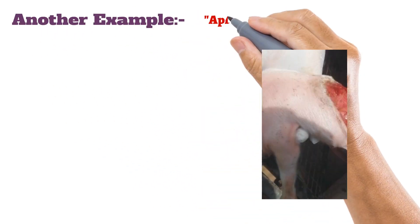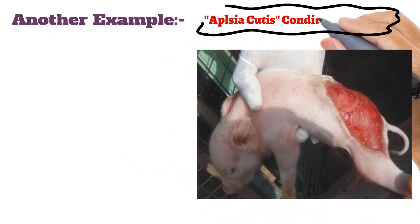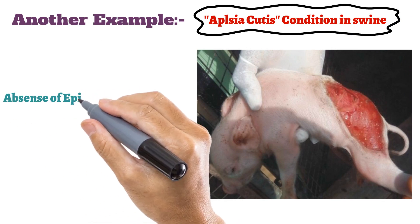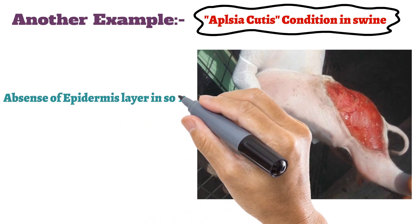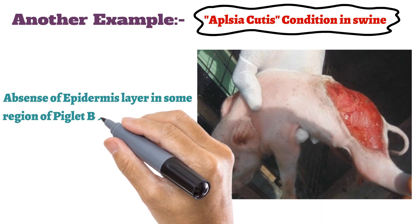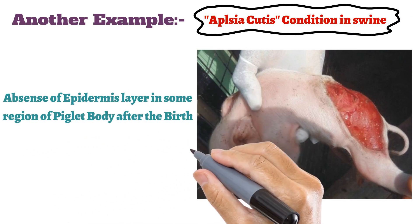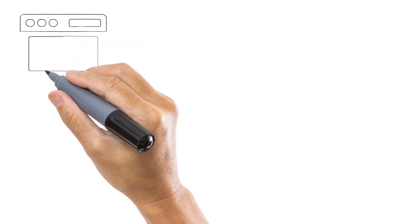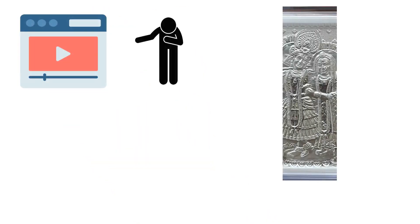An example is Aplasia cutis condition in swine. As you can see in the picture, there is absence of the epidermis layer in some regions of a piglet's body after birth. Thank you so much for watching this video.